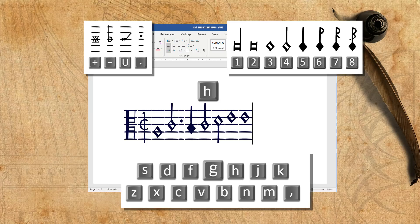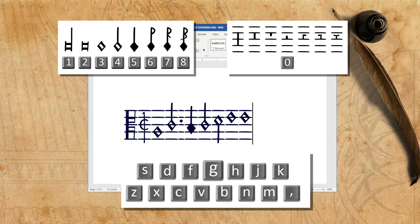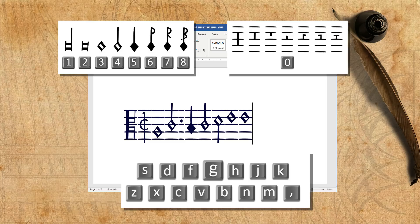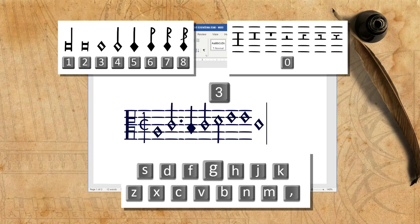Now, in order to create rests, you first have to type the note value you want, and then type 0. This will turn the note into a rest, on a default middle position. For example, if I want a semibreve rest, I'll type 3, semibreve, and then 0.